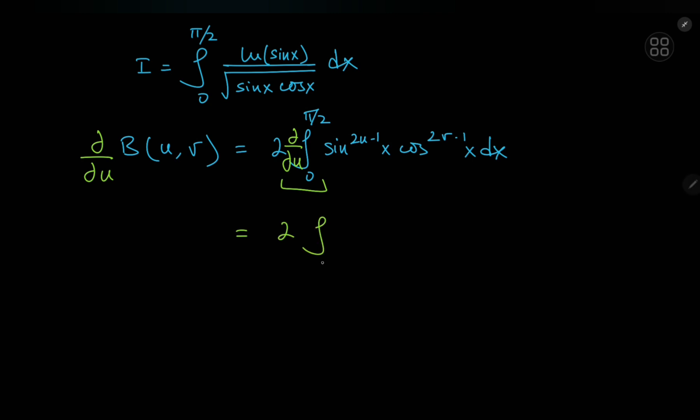So on the switch up we have twice the integral from 0 to pi by 2 of the partial derivative with respect to u of sin to the 2u minus 1 of x times the cosine to the 2v minus 1 of x dx. So differentiating partially with respect to u we get twice the integral from 0 to pi by 2 of sin to the 2u minus 1 of x times cosine to the 2v minus 1 of x times the logarithm of this constant base of sin x and because of the chain rule we have an extra factor of 2 as well so that means we have 4 times this integral rather than twice it.